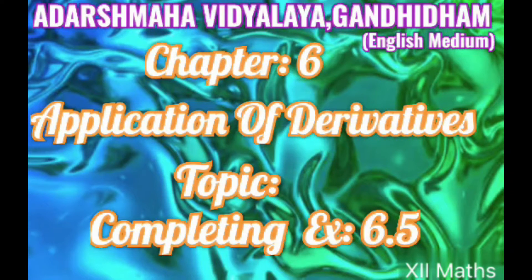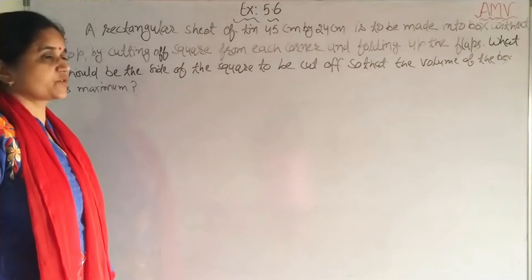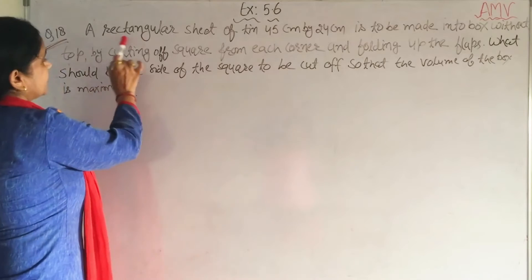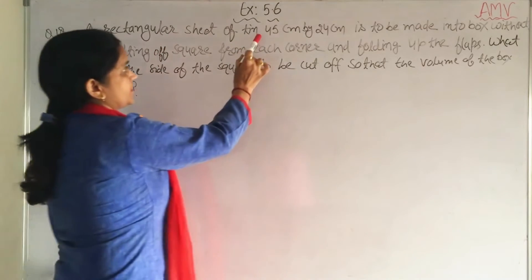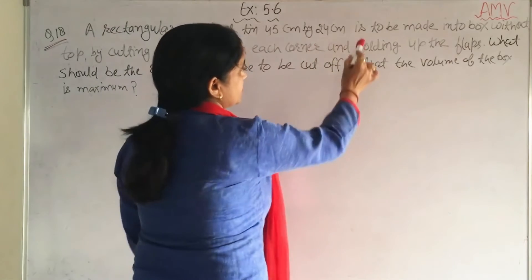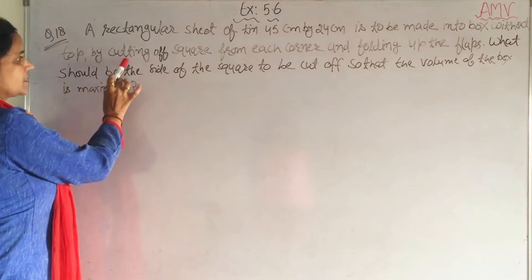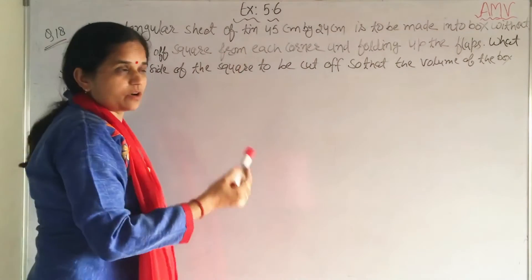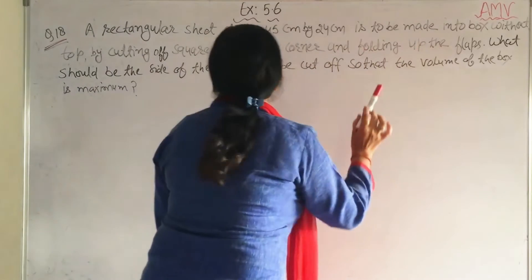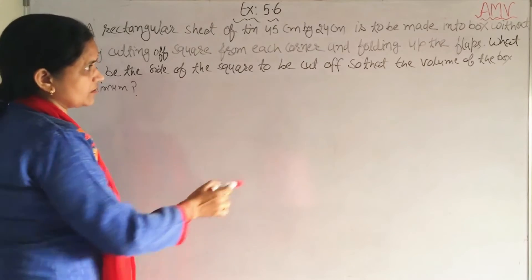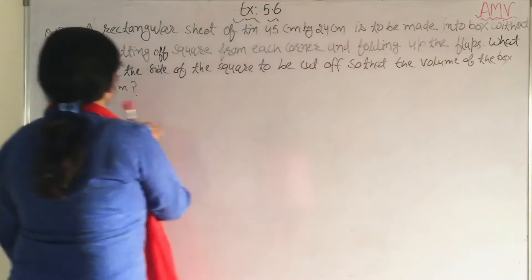Good morning students. Let's continue chapter 6. Today's topic is completing exercise 6.5 — some important questions. Question number 18: A rectangular sheet of tin 45 cm by 24 cm is to be made into a box without top, by cutting off squares from each corner and folding up the flaps. What should be the side of the square to be cut off so that the volume of the box is maximum?